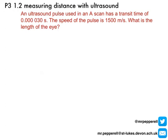Now it's time for you to have a go at the maths. Here's the question: an ultrasound pulse used in an A-scan has a transit time of 0.000030 seconds. The speed of the pulse is 1,500 metres per second. What is the length of the eye? Write down the equation you're going to use, substitute your figures in, and give me the answer in the correct units. Pause me, have a go, then turn me back on to see how we get on.